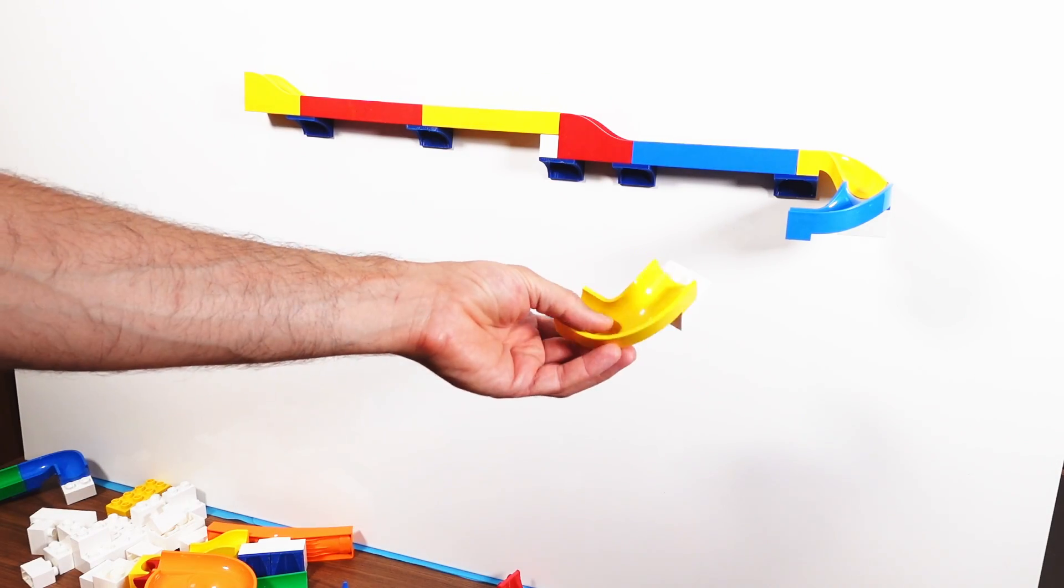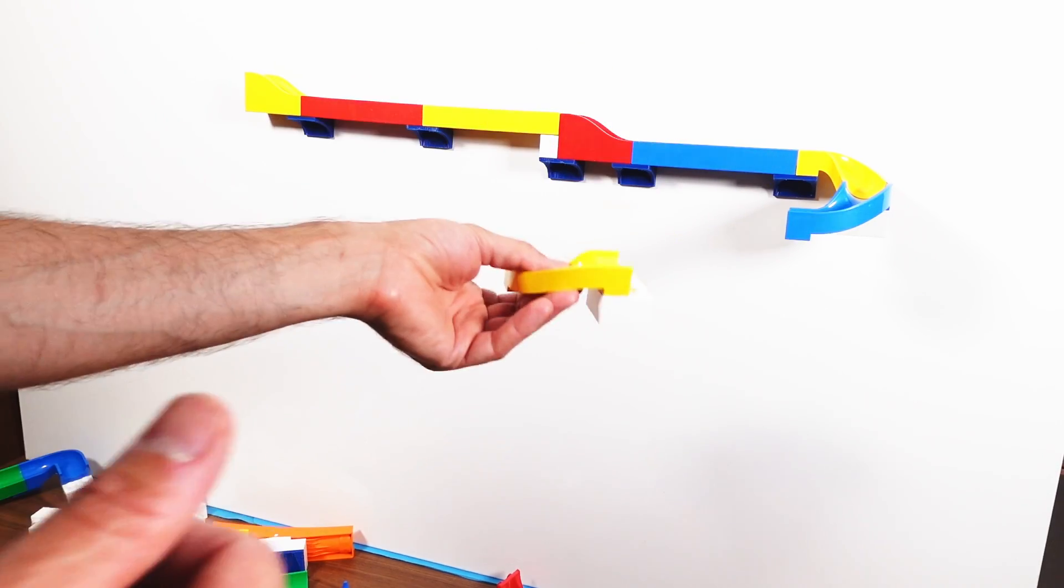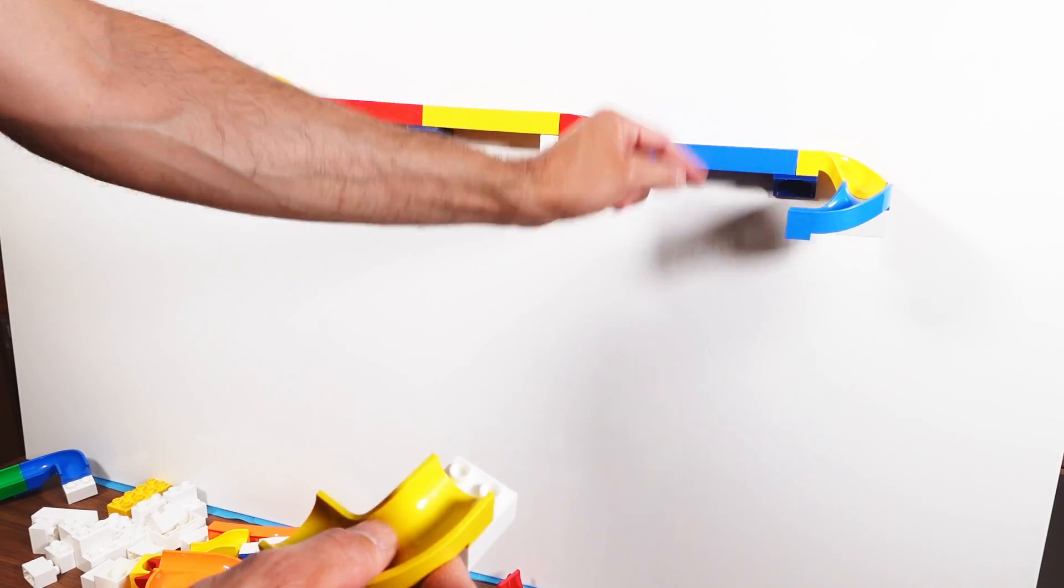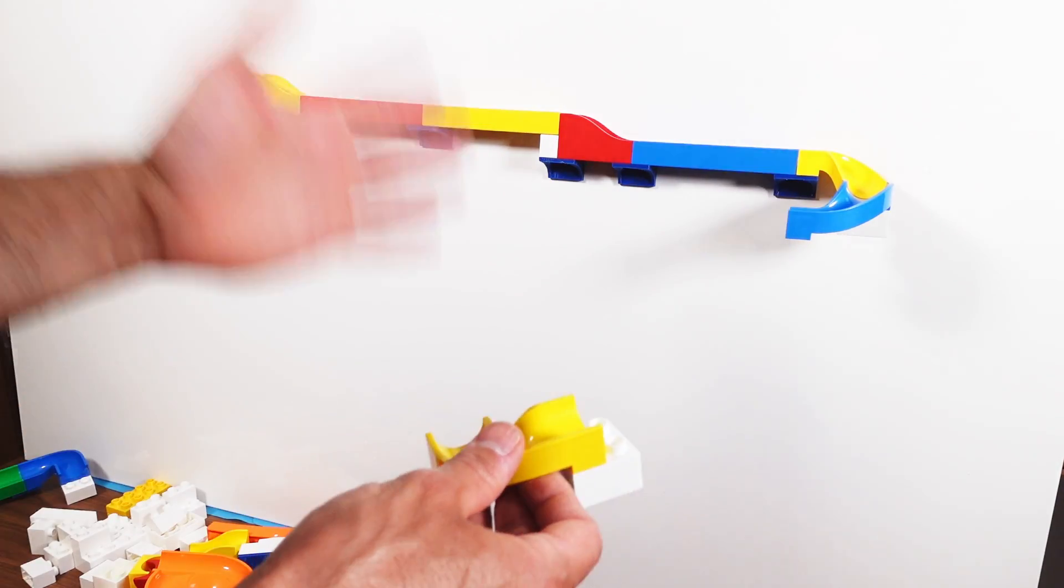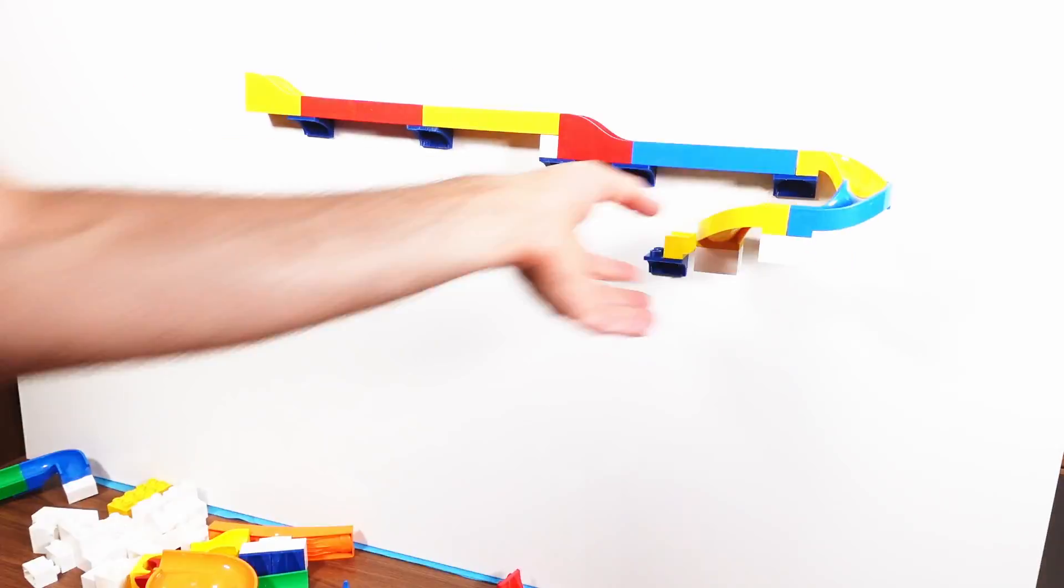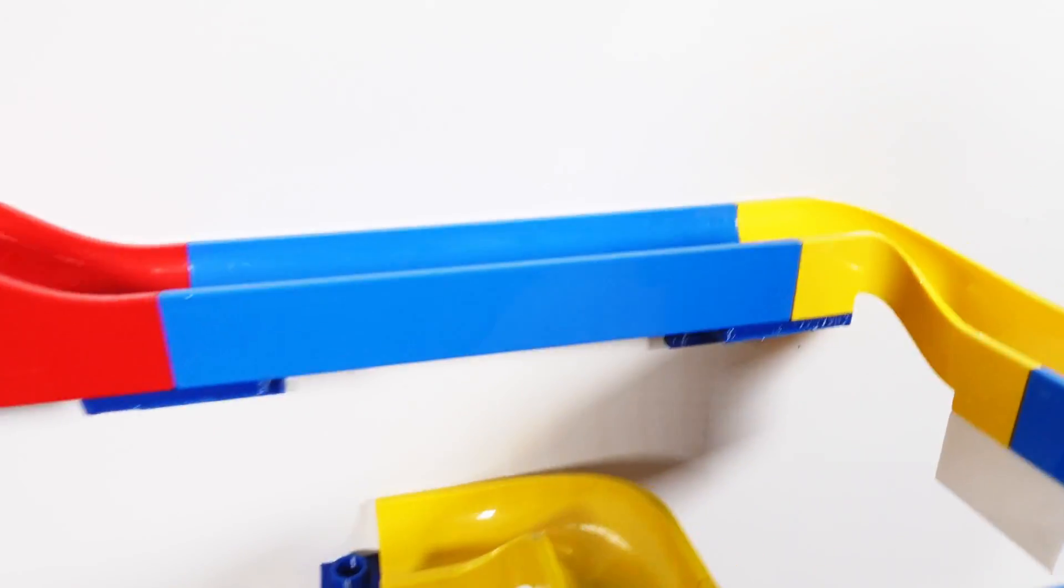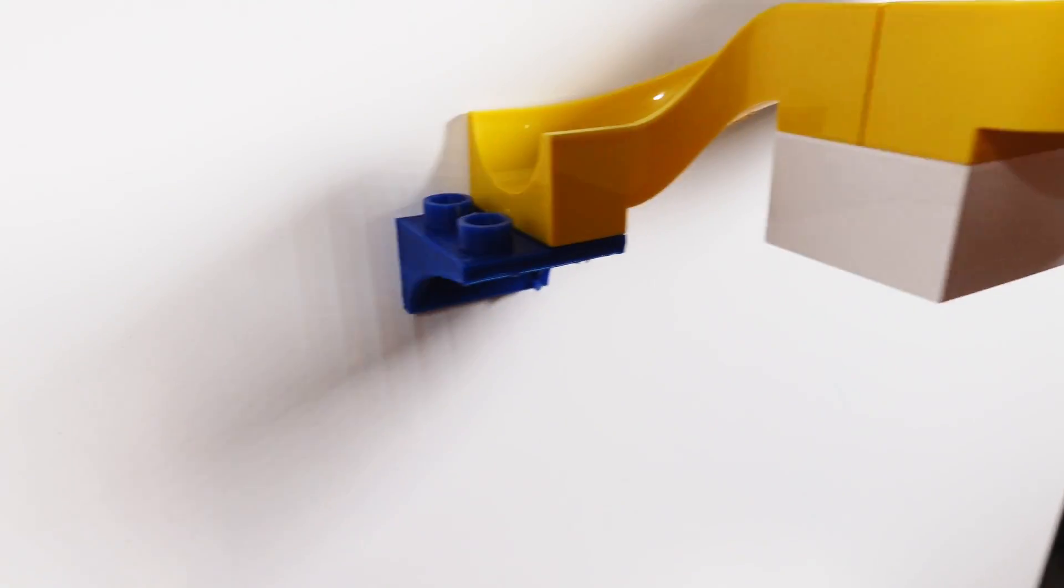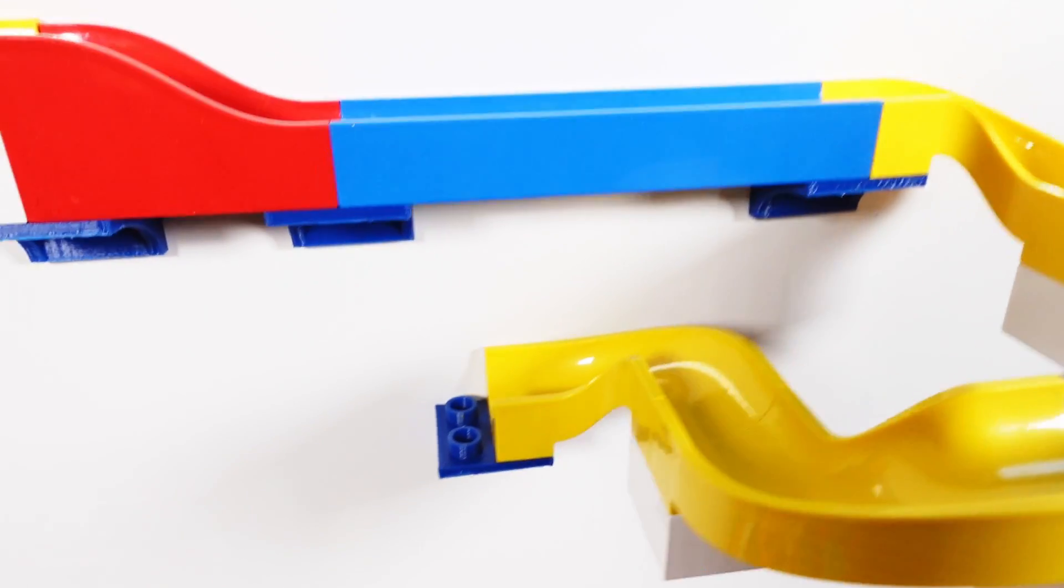Those corner pieces, they are of course suspended in mid-air right now but the holders at the beginning and the end of this turn will be strong enough to hold them. This is how the turn looks close up. These two corner elements here are hanging in mid-air but the holders are strong enough to keep the whole thing in place.